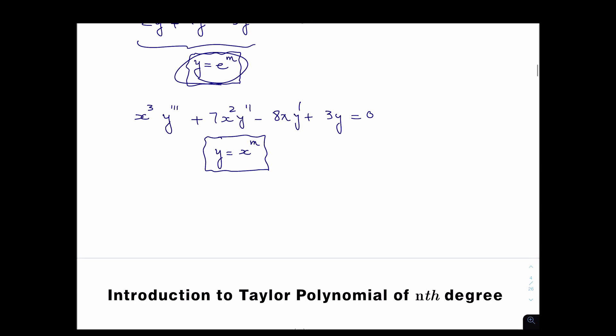Now, what if you have (x³ - 1)y'' - 7x²y' + y = 0? How would you solve a differential equation like that, where the power of the coefficient is different than the order of the derivative? That's what we're going to focus on in this chapter.